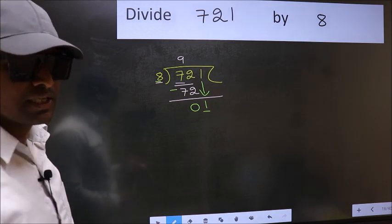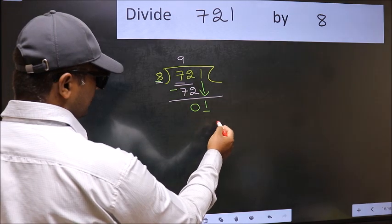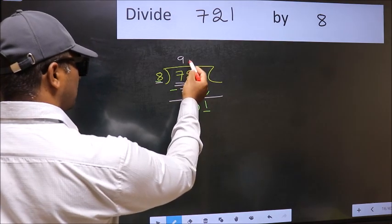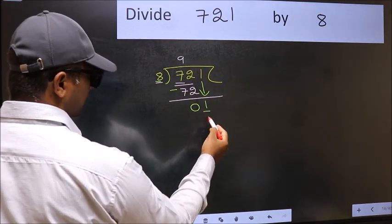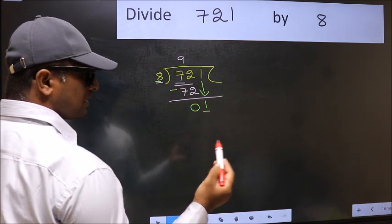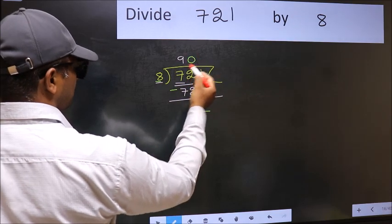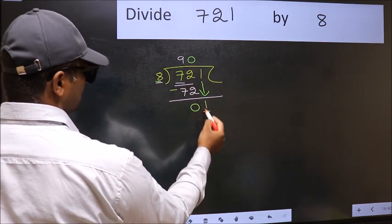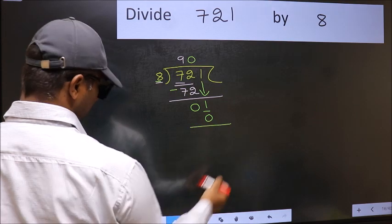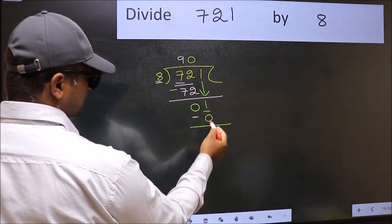Instead, what you should think of doing is, which number should we take here? If I take 1, we will get 8. But 8 is larger than 1. So what we should do is we should take 0. So 8 into 0, 0. Now we should subtract. 1 minus 0, 1.